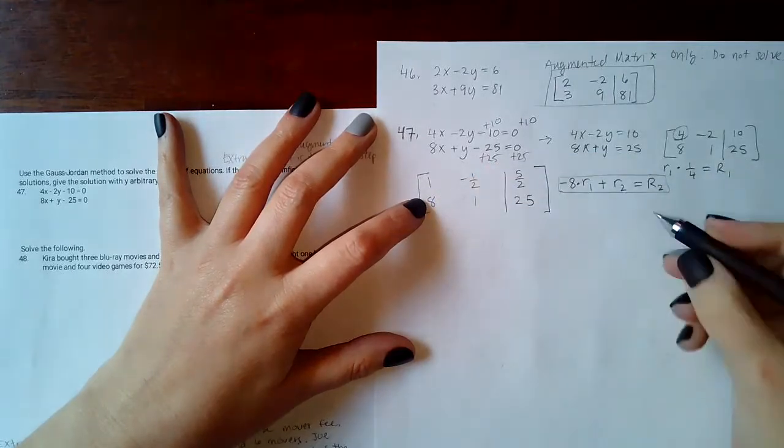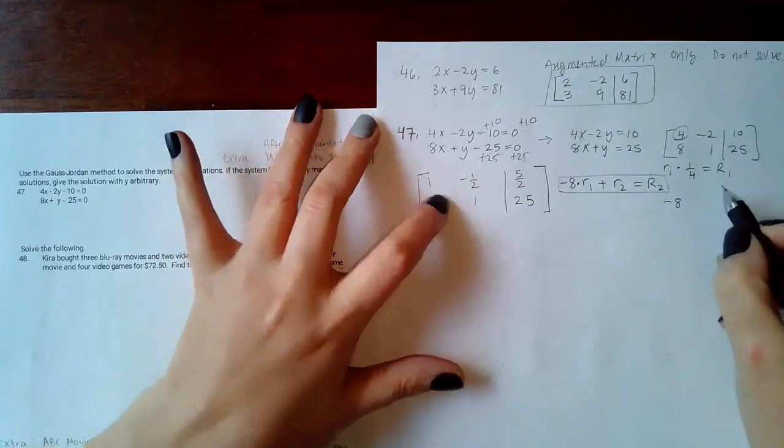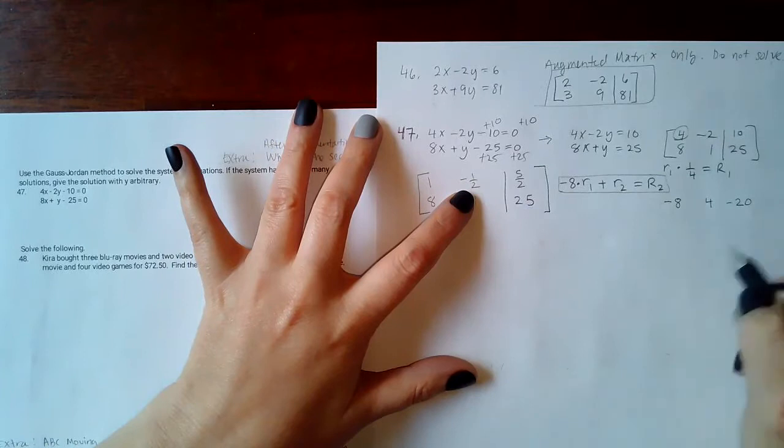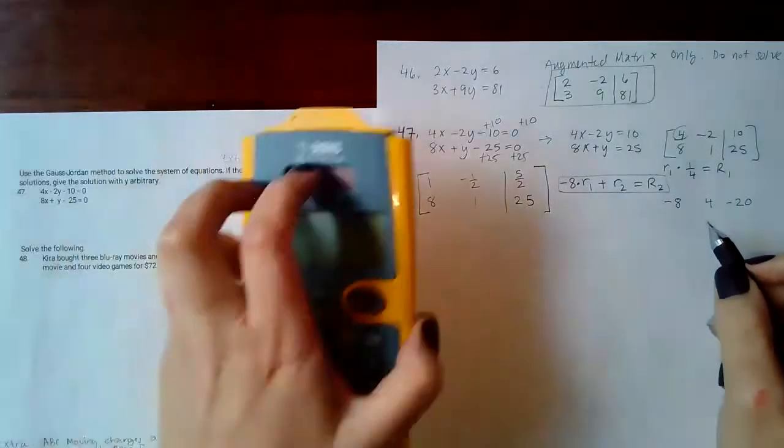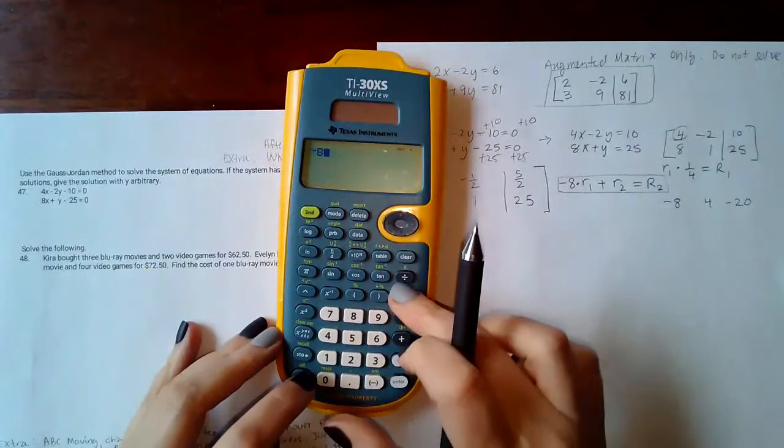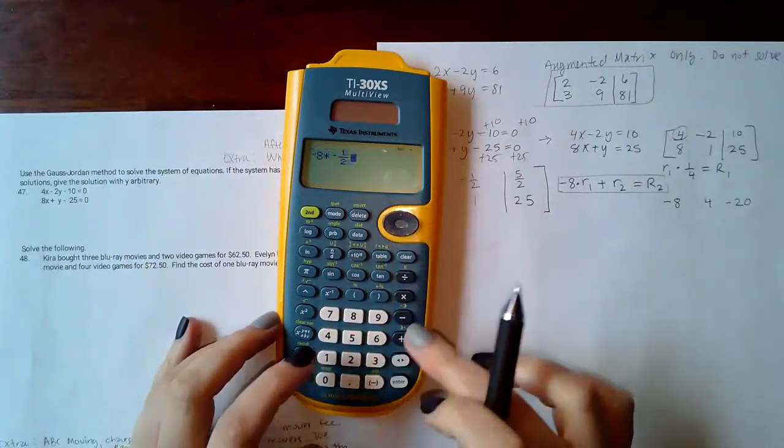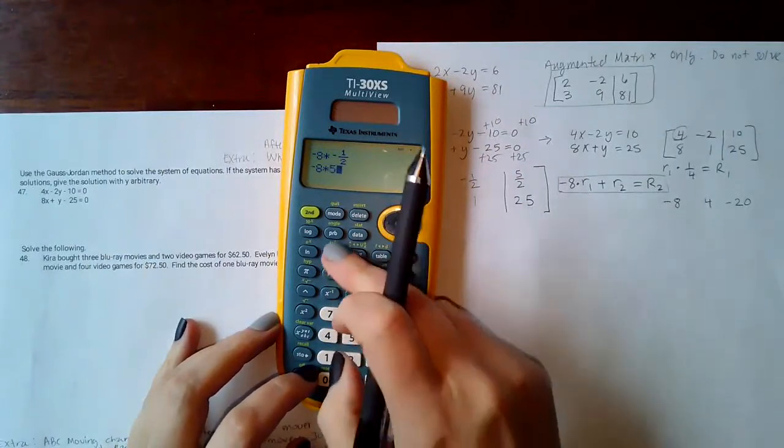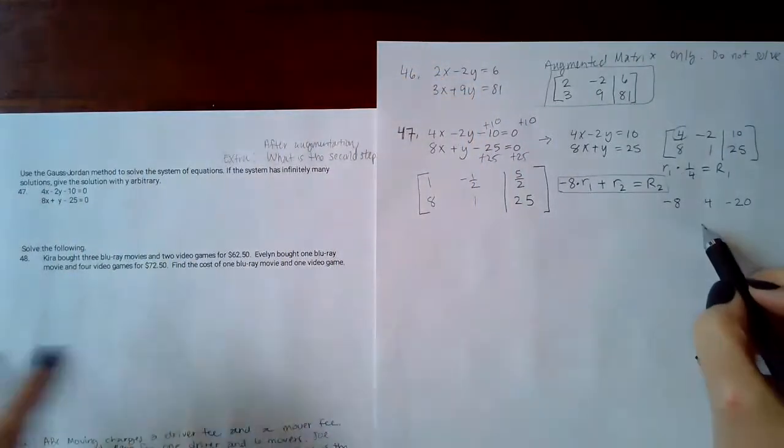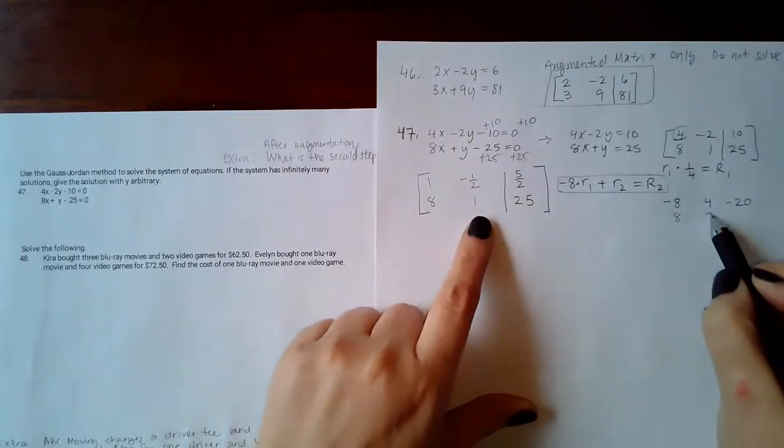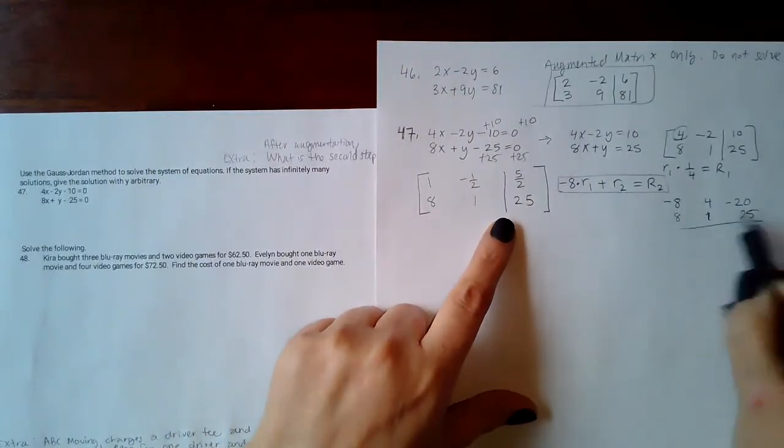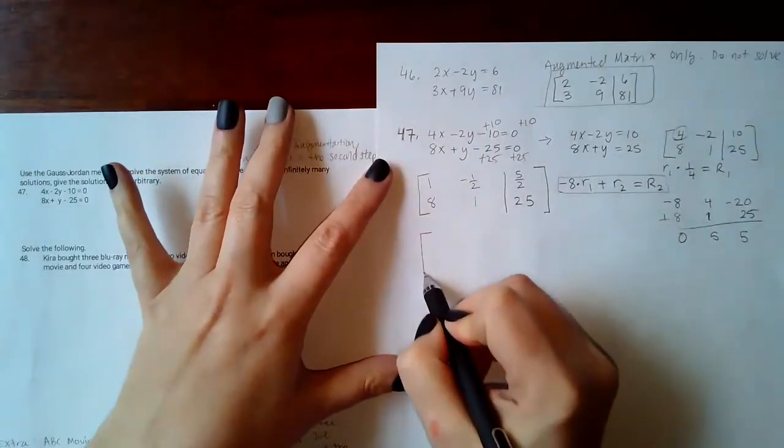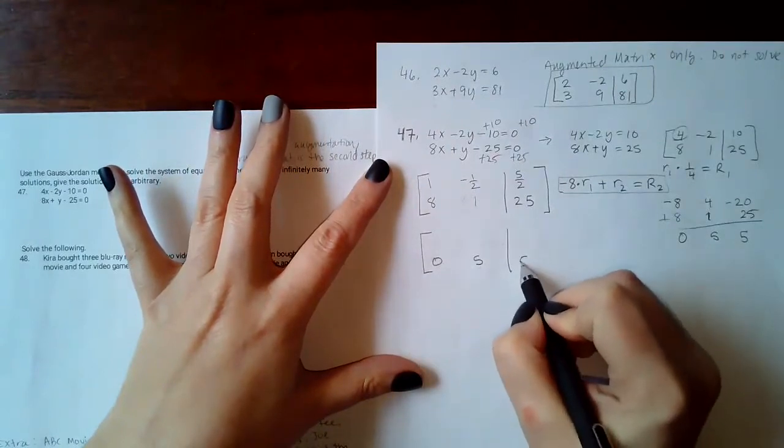Since I have to solve this, I'm going to go ahead and do that and keep going. So I get negative 8 positive 4 and negative 20. Let me make sure because every time I try to do stuff in my head things don't always come out. I do get positive 4, and negative 8 times 5/2 is negative 20. Row 2 goes underneath and I will add. That will give me 0, 5, and actually 5. So row 2 becomes 0, 5, and 5.